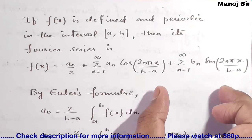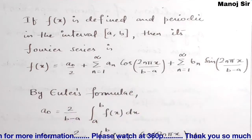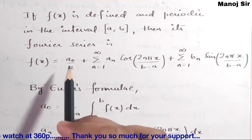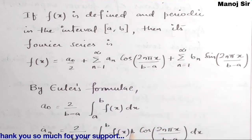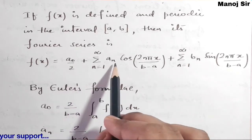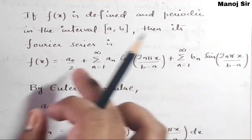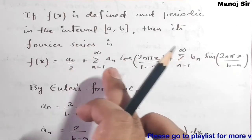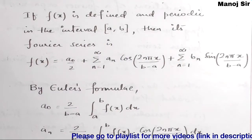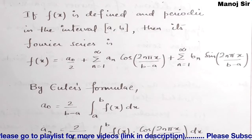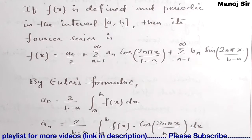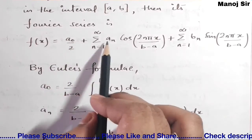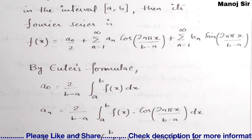This is the standard formula of Fourier series. We need to find a₀, aₙ, and bₙ, substitute them into the formula, and the result is f(x) — the Fourier series of the given function. Let us see how to find a₀, aₙ, and bₙ.